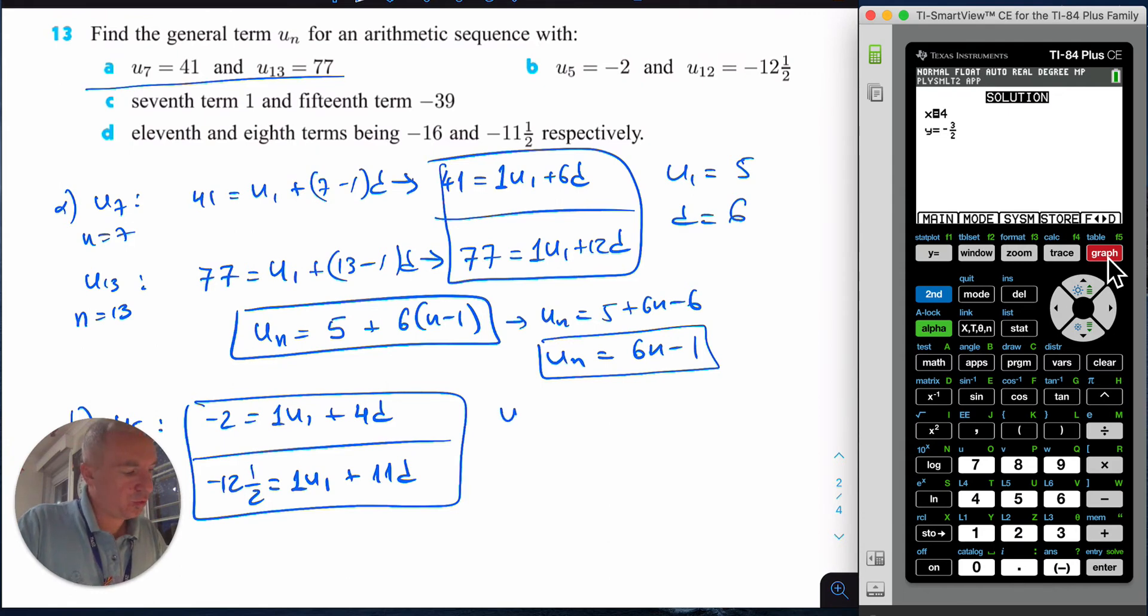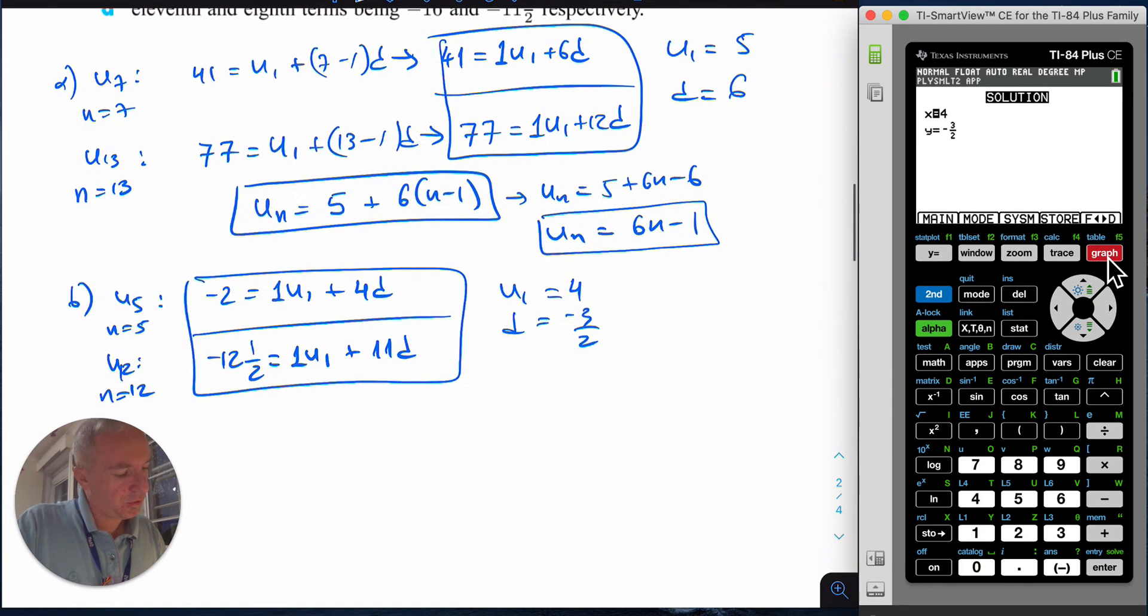I get my answer: u1 = 4 and d = -3/2. So the general form would be un = 4 - (3/2)(n-1), and I would leave it as is.